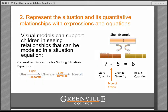Children don't have too much trouble writing an addition sentence when the problem involves two sets being joined — a result unknown situation. Likewise, they find it fairly straightforward to write a subtraction sentence for a standard take-away situation. However, these represent the two easiest problem types, and children are exposed to many more problem types that will be much more challenging to represent symbolically.